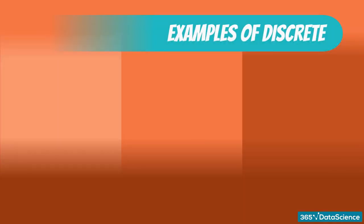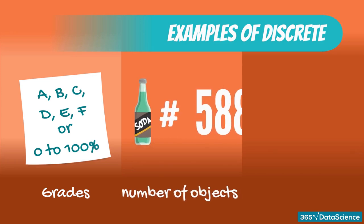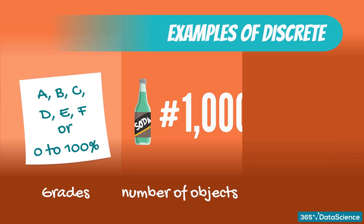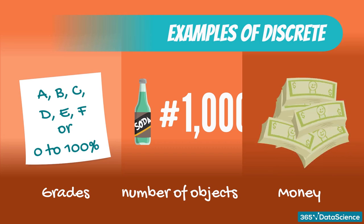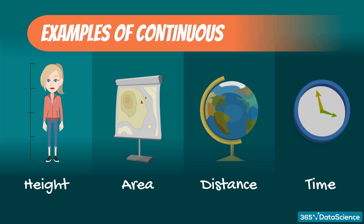Here are some other examples of discrete and continuous data. Grades at university are discrete: A, B, C, D, E, F, or 0 to 100%. The number of objects in general — whether bottles, glasses, tables, or cars — can only take integer values. Money can be considered both, but physical money like banknotes and coins is definitely discrete; you can't pay $1.243. Apart from weight, other measurements are also continuous: height, area, distance, and time. All of these can vary by infinitely smaller amounts. Time on a clock is discrete, but time in general isn't — it can be anything like 72.123456 seconds.